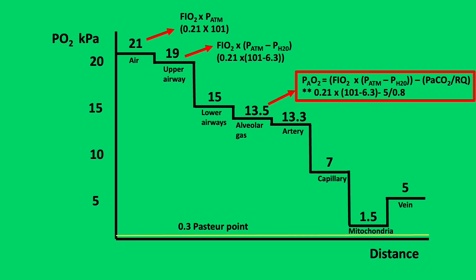The diagram illustrates the oxygen cascade. The Y axis is PO2 in kilopascals, X axis is distance. We'll start at the top left corner. Atmospheric pressure at sea level is 101 kilopascals and oxygen is present in air at 21%, so the inspired PO2 is 21 kilopascals.